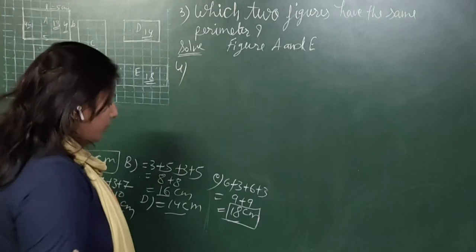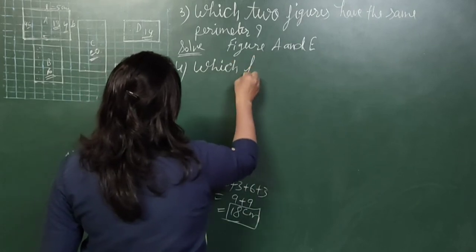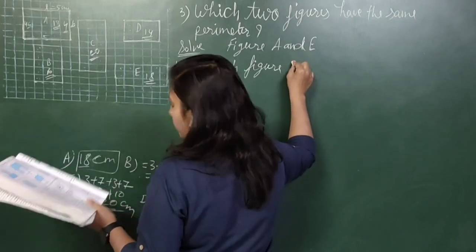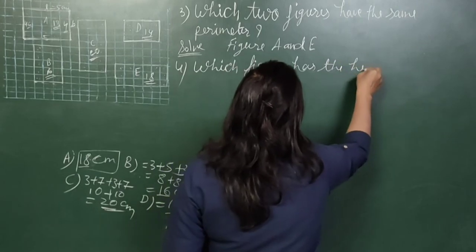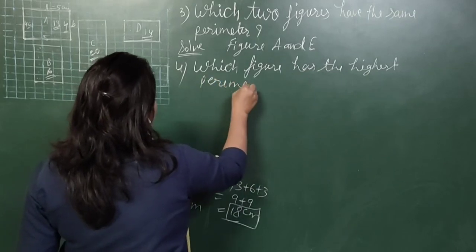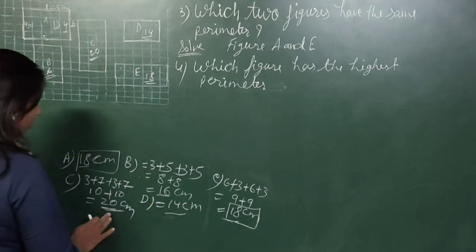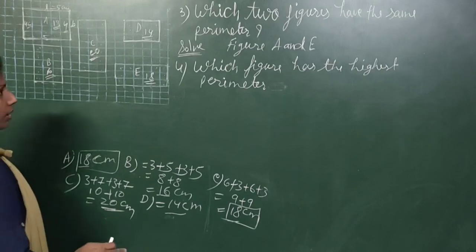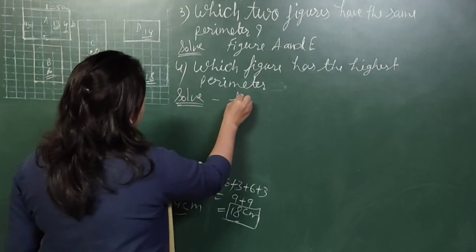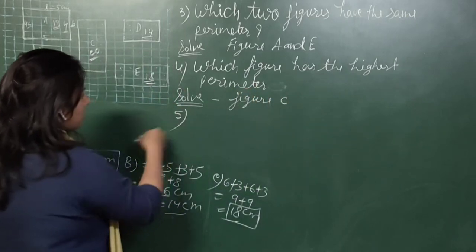Question number 4: Which figure has the highest perimeter? Comparing all values: 18, 16, 20, 14, and 18. Figure C has the highest perimeter of 20 centimetres. Write in your workbook: figure C has the highest perimeter.